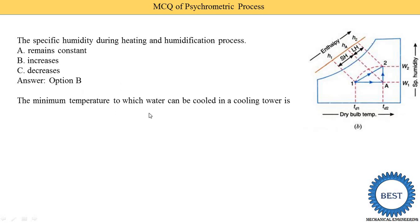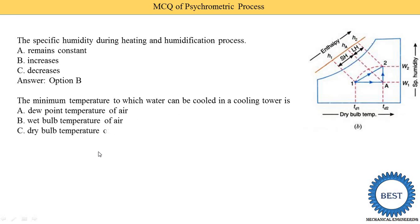The minimum temperature to which water can be cooled in a cooling tower is: the dew point temperature of the air, the wet bulb temperature of the air, the dry bulb temperature, or the ambient air temperature? The correct answer is option B: the minimum temperature to which water can be cooled in a cooling tower is the wet bulb temperature of the air.